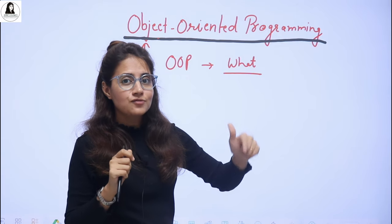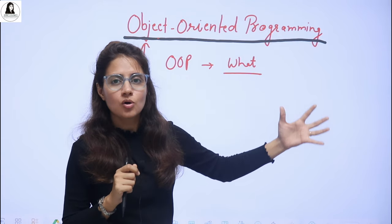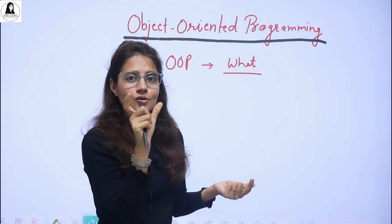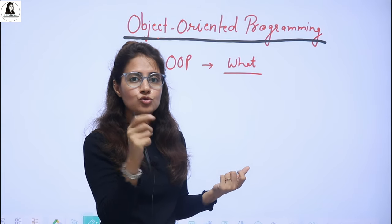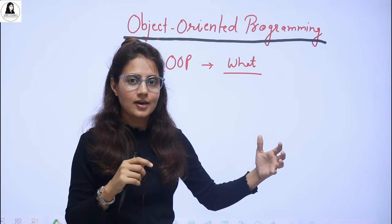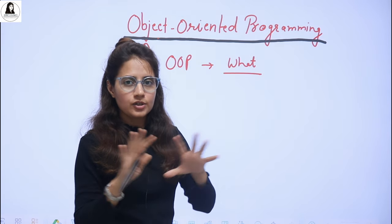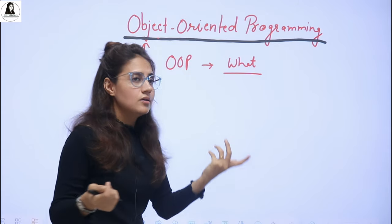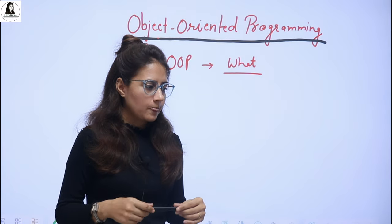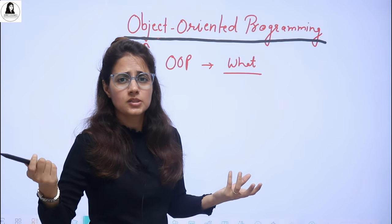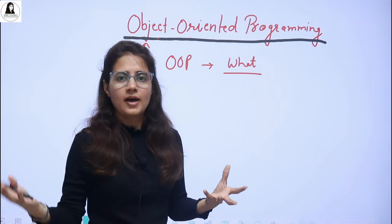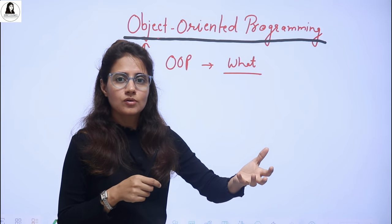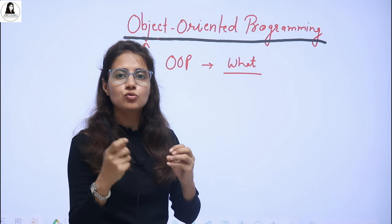After discussing all the OOP concepts — the four pillars of OOP — and writing so many programs, you will get the real meaning of this. OOP concepts are used to model real world scenarios in programming. For example, you might be developing software for a library management system, student management system, hospital management system, or e-commerce websites. These softwares are made to solve real world problems.